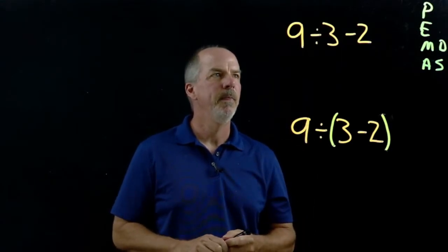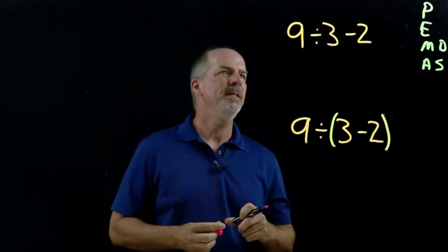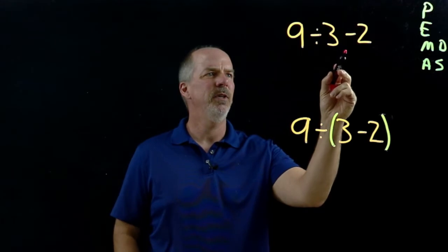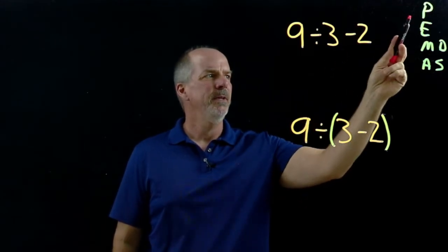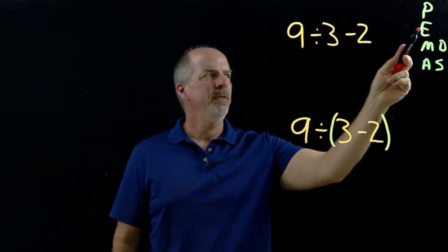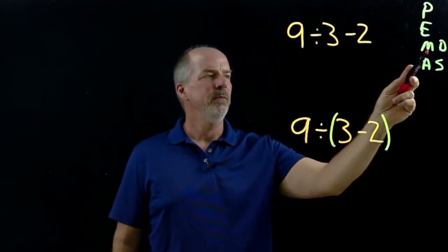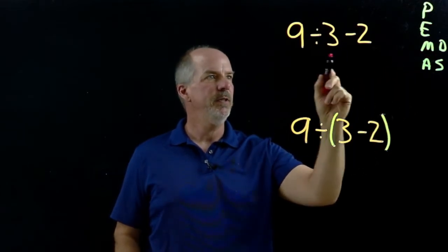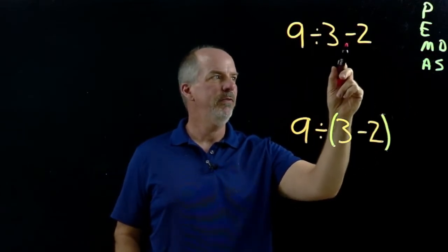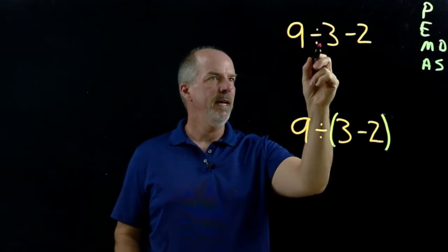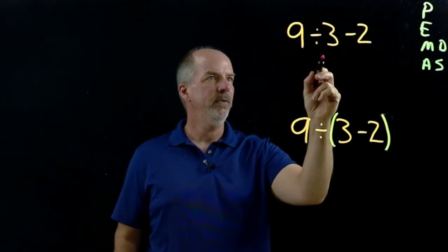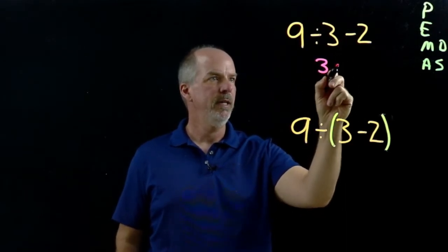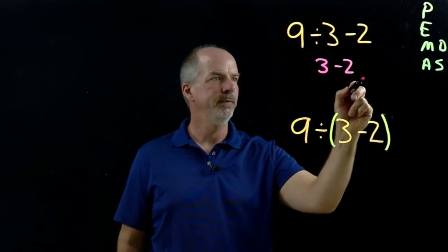Let's look at this example. In this example we have division and we have subtraction. No parentheses, no exponents, so multiplication and division go left to right. We have division so we have to do division before we do subtraction. So 9 divided by 3 is 3, then 3 minus 2 is 1.